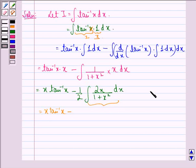This will be equal to x tan inverse x minus, now what we do here is we put 1 plus x square to be equal to t. So this implies that 2x dx will be equal to dt.